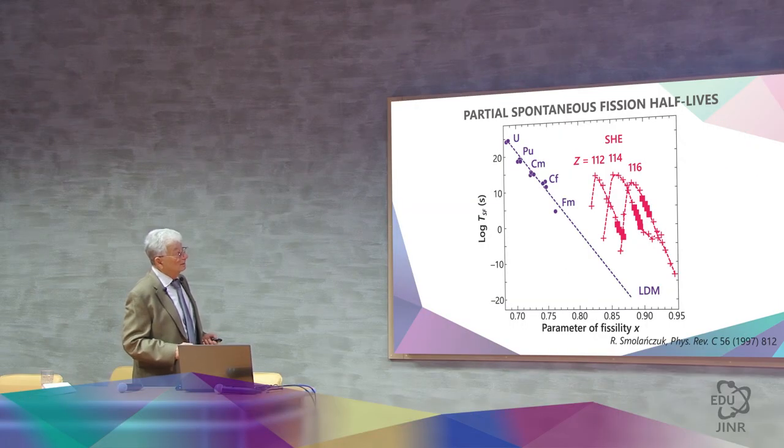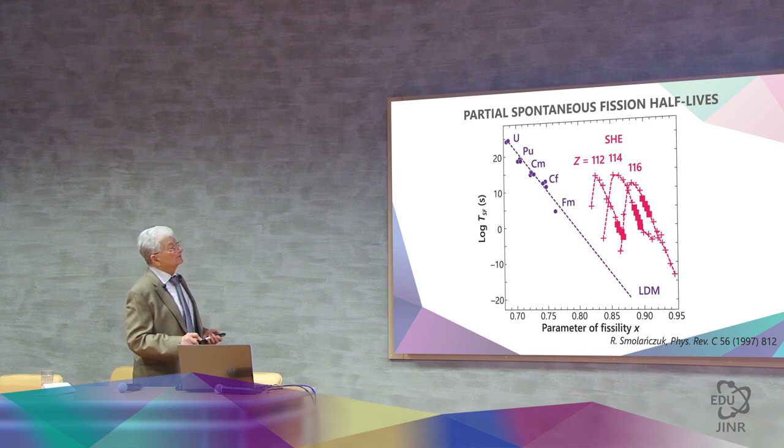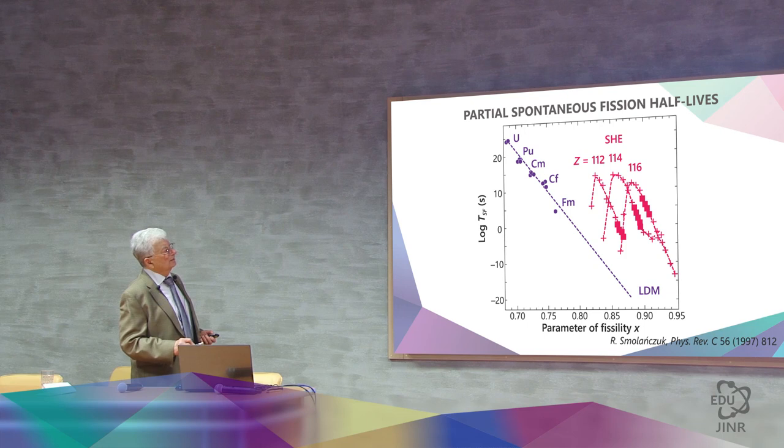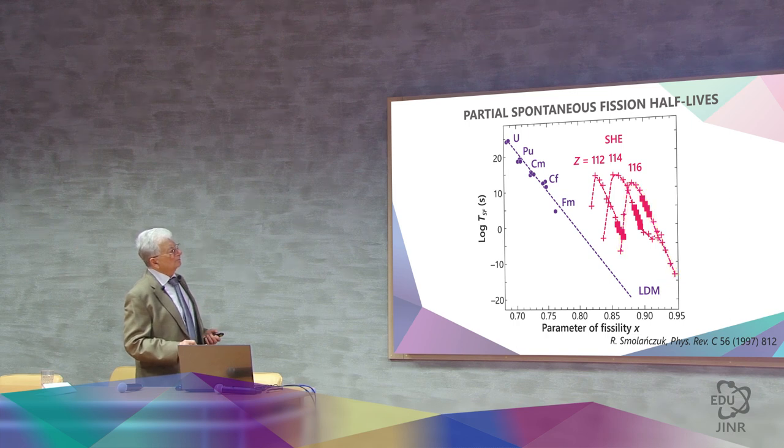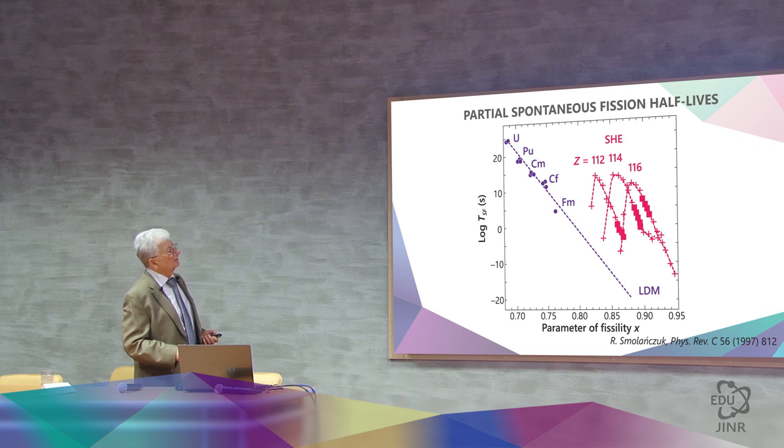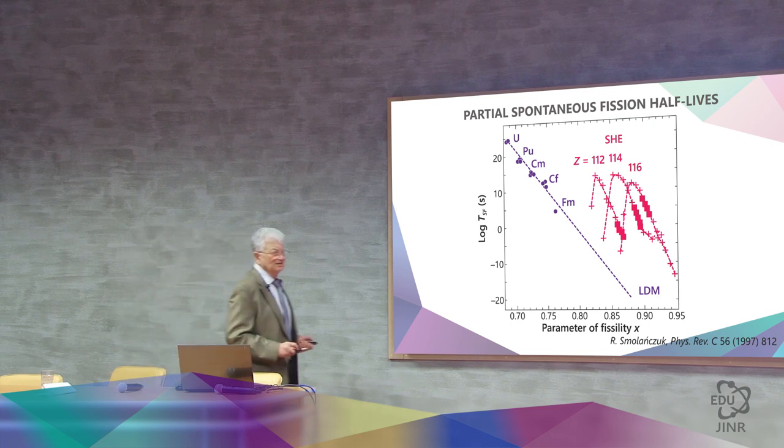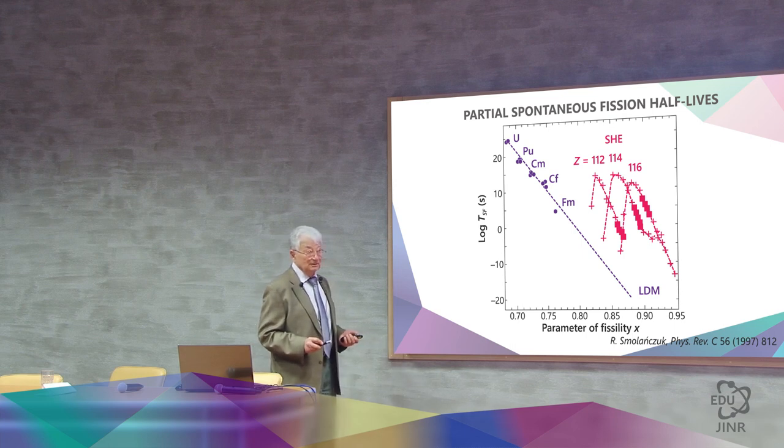And the presence of a barrier gives a drastic increase in the lifespan of the earth. Such as elements 112, 114, and 116, which have this magic structure. In relation to what the model of a liquid drop predicted, their stability increases by about 20 to 30 orders of magnitude.